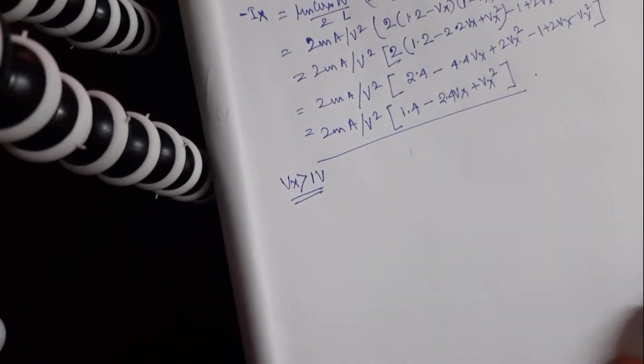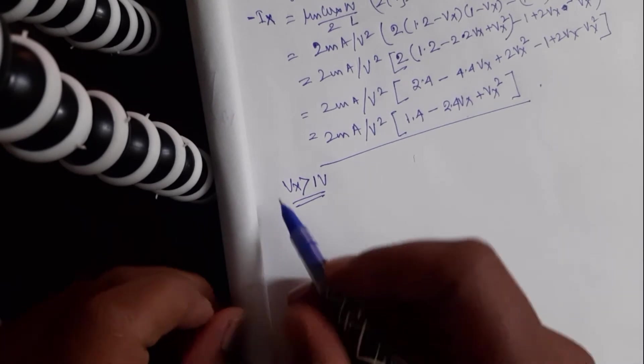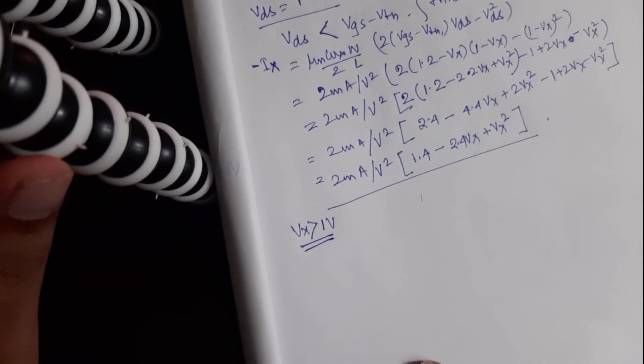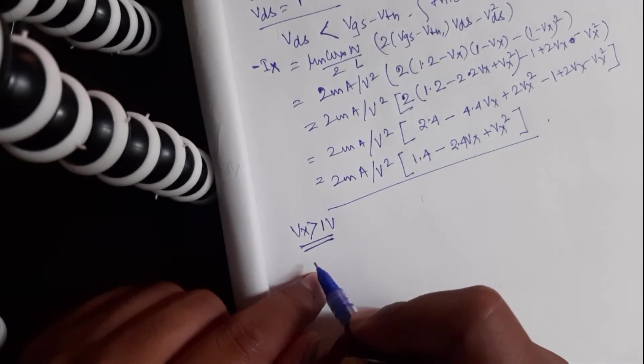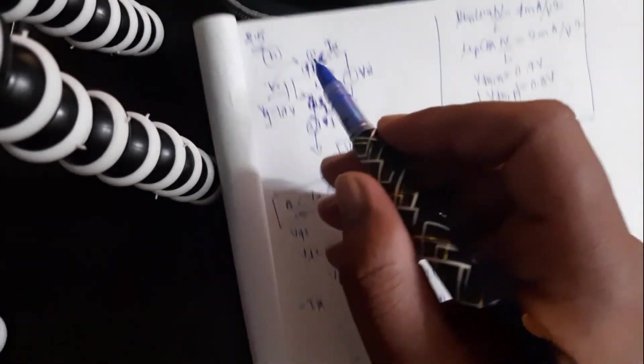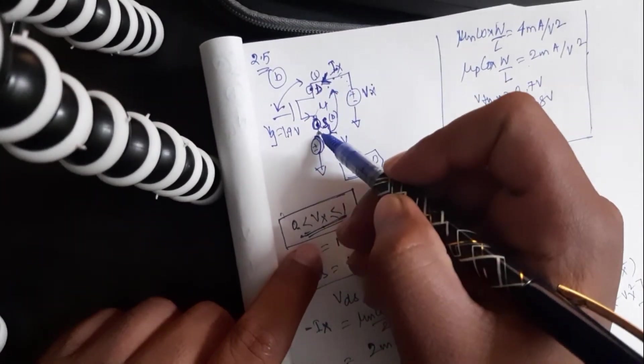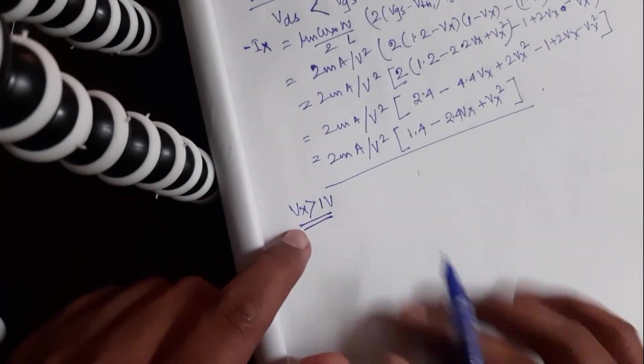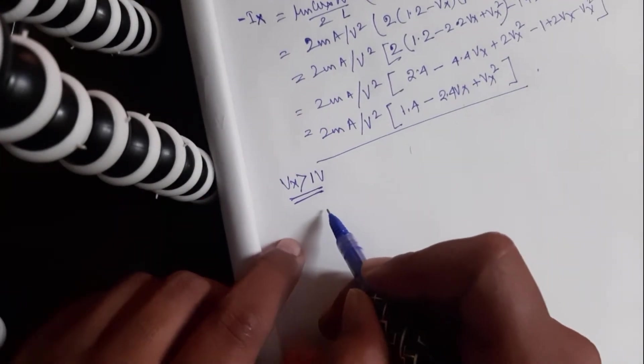Let us look at what happens when the voltage Vx goes beyond 1 volt. So when Vx is greater than 1 volt, the drain and source again change.